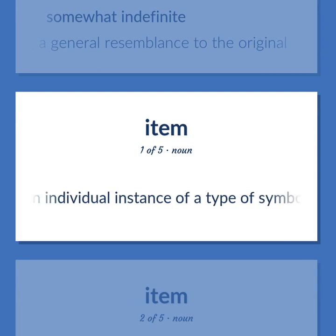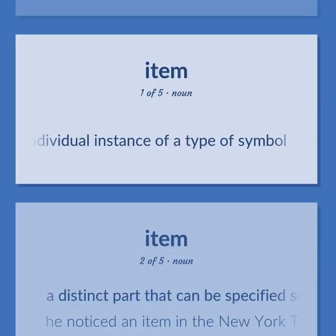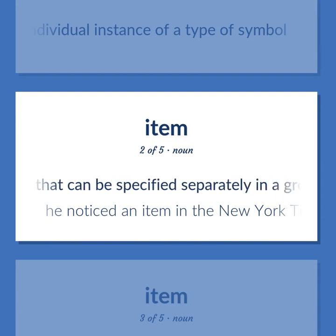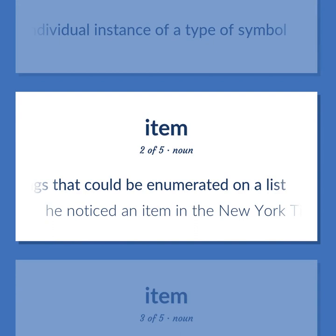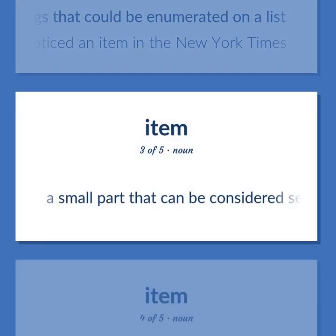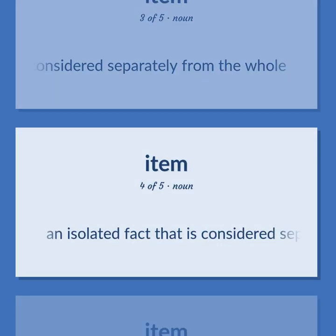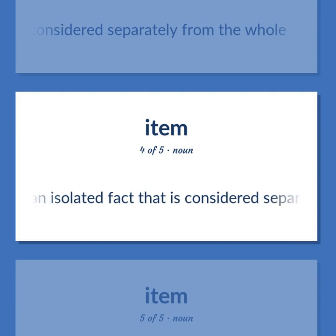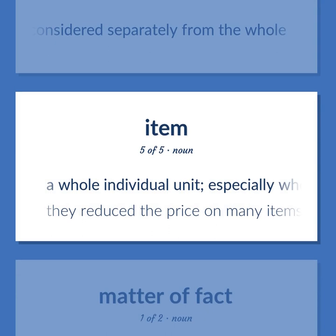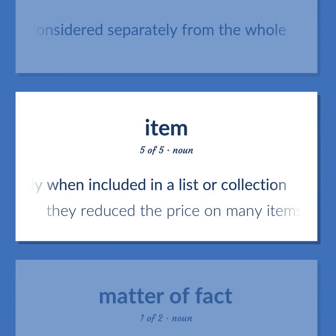Item: An individual instance of a type of symbol. A distinct part that can be specified separately in a group of things that could be enumerated on a list — he noticed an item in the New York Times. A small part that can be considered separately from the whole. An isolated fact considered separately from the whole. A whole individual unit, especially when included in a list or collection — they reduced the price on many items.